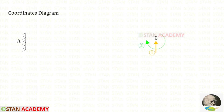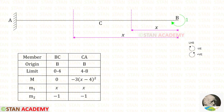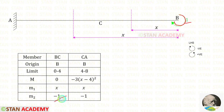Now we are going to find the moment M2. We have to apply unit moment at the second coordinate. We have kept MB in the clockwise direction, so we apply unit moment in the clockwise direction at point B. This unit moment is acting in the clockwise direction, so M2 = −1 in both sections.